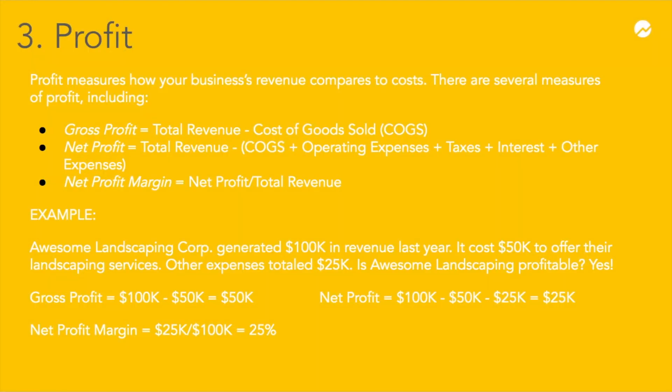Next, we're going to cover some business finance terms that you're likely to come across when analyzing financial statements, either on your own or with the help of your accounting or tax professional. For example, you'll spend a lot of time as a business owner analyzing profitability—but what exactly does the term profit mean? Profit measures how your business's revenue compares to your company's costs. There are several different measures of profit, including gross profit, net profit, and net profit margin. Gross profit is your business's total revenue minus the cost of goods sold.